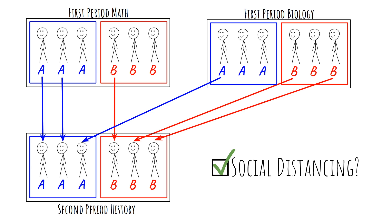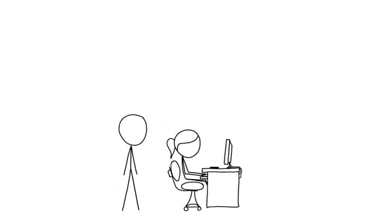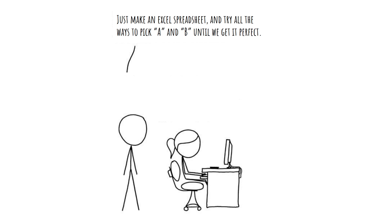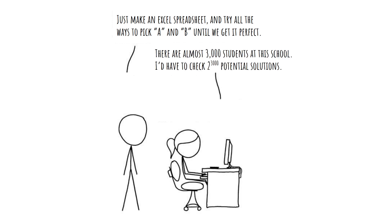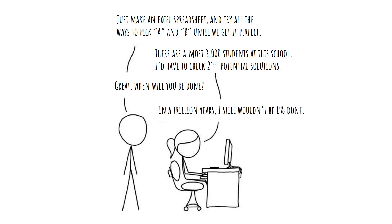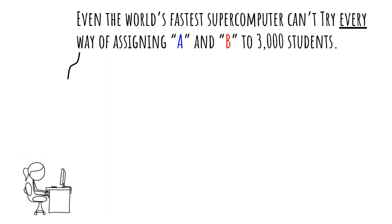Now that we know that some A-B assignments work better than others, the goal is to find the best one. Someone might say, oh perfect, we have 3,000 students in our school, so let's just go into Microsoft Excel, make a spreadsheet with 3,000 rows, and manually pick A's and B's — just try all the combinations till we get it perfect. Of course that's not going to work, because if you have 3,000 students that would be 2 to the 3,000 different ways of assigning A and B. Even if you had access to the world's fastest supercomputer, give it a trillion years and you still won't get 1% of the way through that list. So we need a different technique.